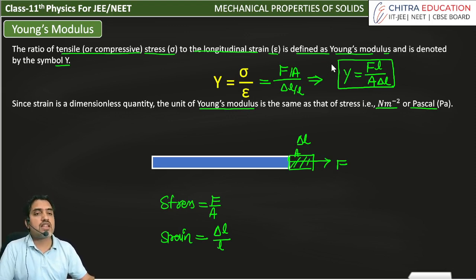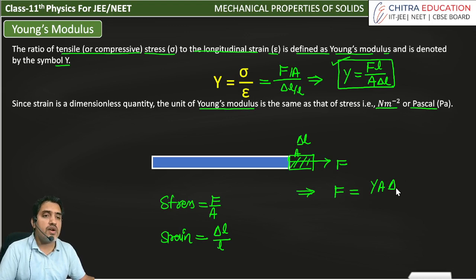Here we have to remember this formula. We have seen Y equals F into L divided by A into delta L. Here if we want to find F, we can write F is equal to Y into A into delta L divided by L.